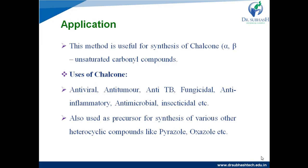Application: this method is useful for the preparation of chalcone and other alpha-beta unsaturated carbonyl compounds, which are used in synthesis of different medicinal compounds and polymers. Chalcone and its derivatives are useful as antiviral, anti-tumor, anti-TB, fungicidal, anti-inflammatory, antimicrobial, and insecticidal drugs. Chalcone is also used as a precursor for synthesis of various heterocyclic compounds like pyrazole, oxazole, and isoxazole, whose preparation we have already studied.